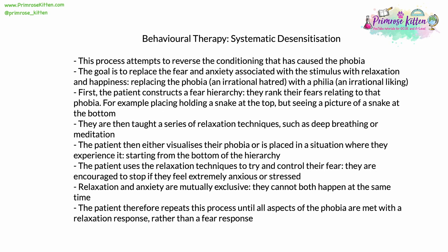There are two main types of behavioral therapy. The first is called systematic desensitisation. This process attempts to reverse the conditioning that caused the phobia. Because behaviors are learned, there is a possibility they can be unlearned and the process reversed. The goal with systematic desensitisation is to replace the fear and anxiety associated with the stimulus with relaxation and happiness — replacing the phobia, an irrational hatred, with a philia, an irrational liking. Firstly, the patient constructs a fear hierarchy, ranking their fears relating to that phobia. In the example of a phobia of snakes, holding a live snake is at the top, while just viewing a picture of a snake is at the bottom — something which isn't that scary.